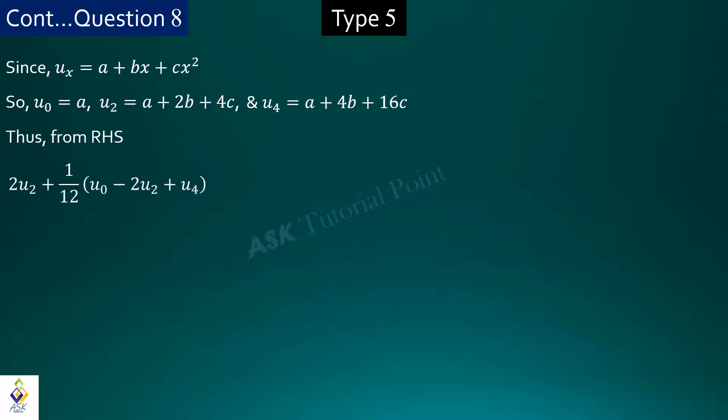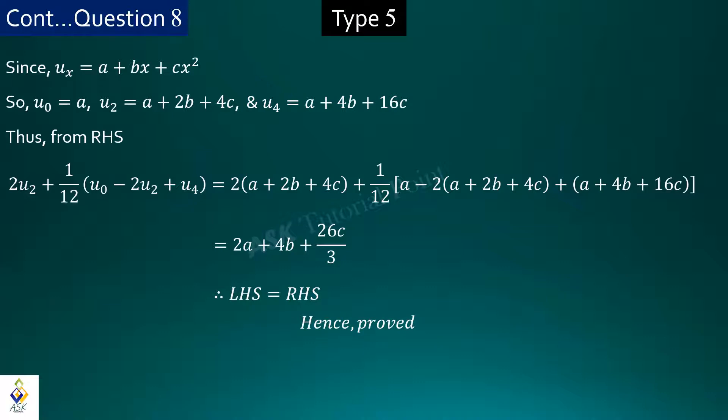Now on the right hand side expression, placing u0, u2, and u4 and simplifying, we will get 2(a plus 4b plus 26c) divided by 3, which is same as the left hand side. Hence, we have proved the given statement.